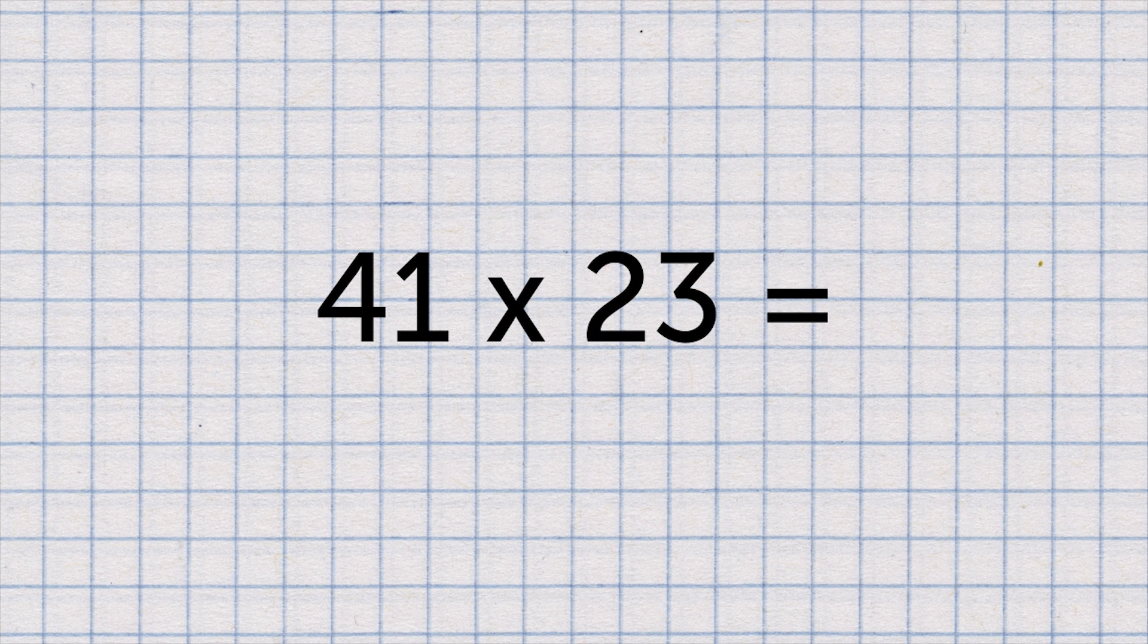Now you have a go. Use a written multiplication method to solve this calculation. What is 41 multiplied by 23?